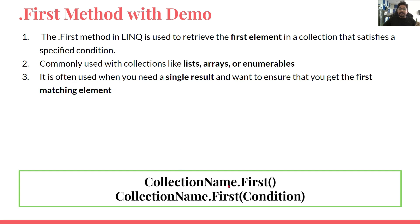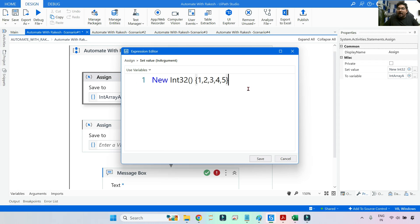The syntax is pretty simple: you take the collection name — which could be a list, array, or DataTable — then write dot First, followed by optional conditions. I'll show all this in demo. Let's get started and understand everything in UiPath Studio.